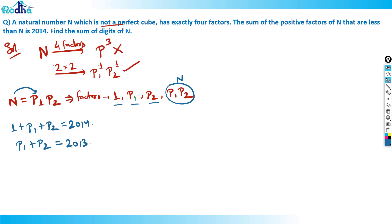If p1 plus p2 equals 2013, the sum of two prime numbers is 2013. This is an odd number. The sum of two prime numbers is odd only when one number is two, the only even prime, otherwise odd plus odd gives even.